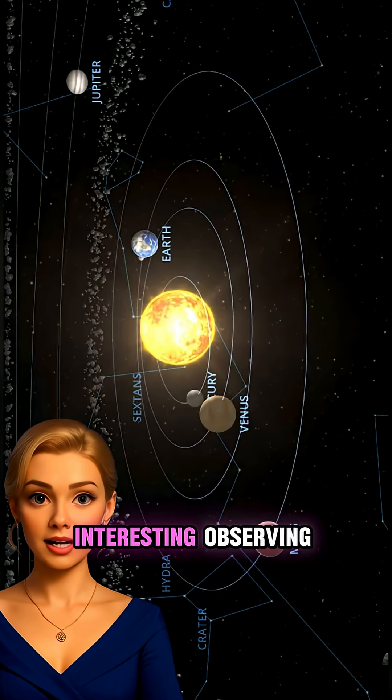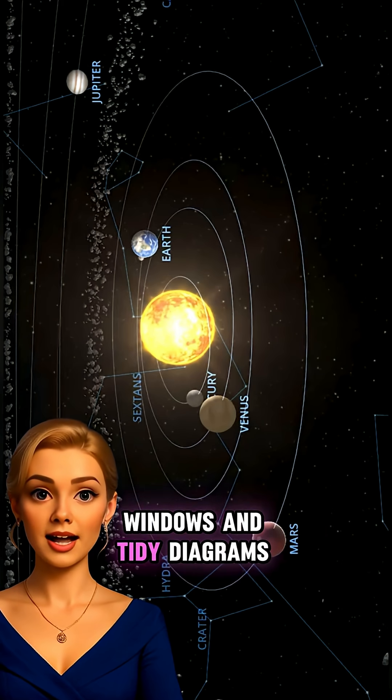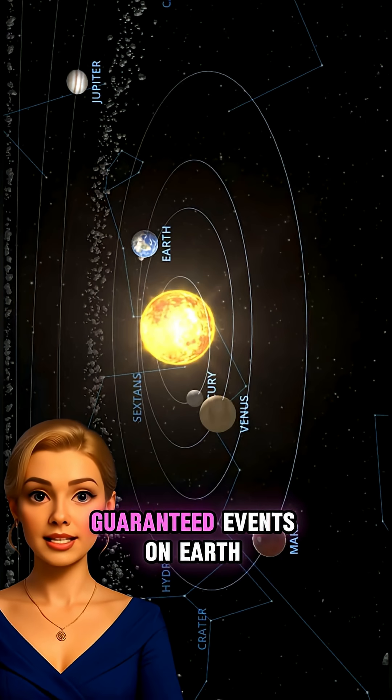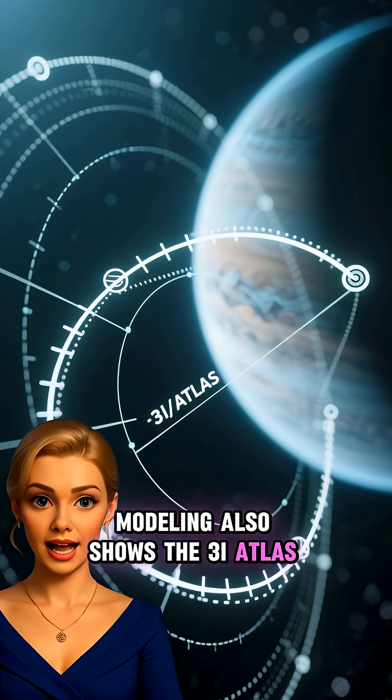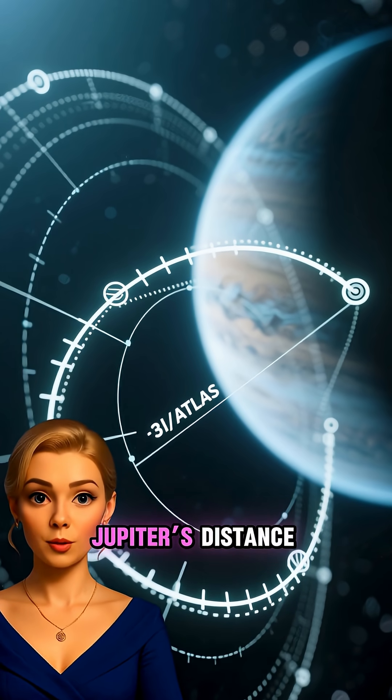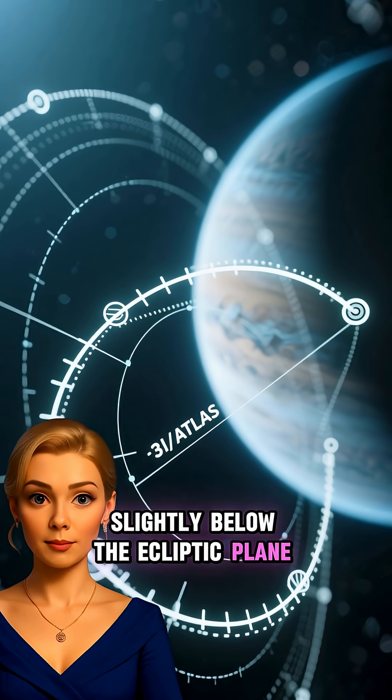They can make for interesting observing windows and tidy diagrams, but they do not cause guaranteed events on Earth. Modeling also shows the Three-Eye Atlas orbit crossing near Jupiter's distance, slightly below the ecliptic plane.